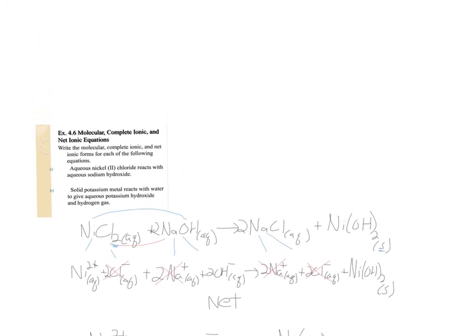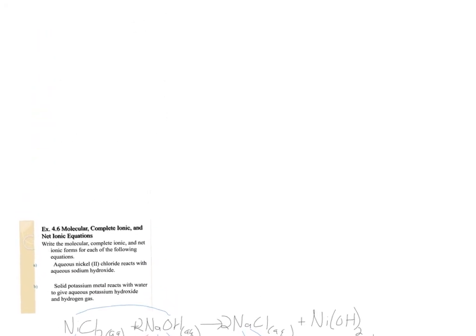For part B, let's move this slide down here to get rid of that. We get another equation. Again, solid potassium reacts with water to make aqueous potassium hydroxide and hydrogen gas, which is diatomic H2. If we look at the phases of all of these, we have solid, liquid, aqueous, and gas.